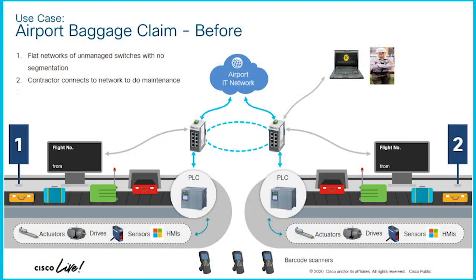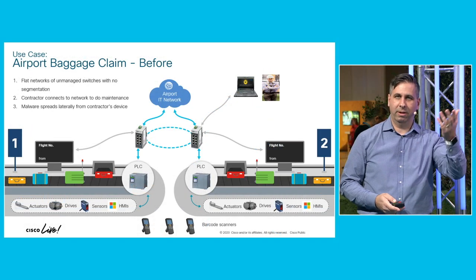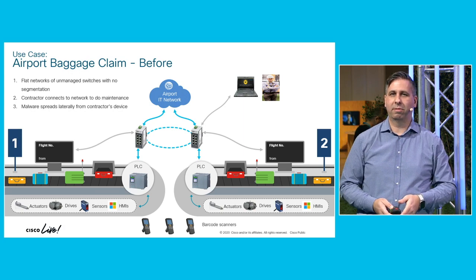Baggage systems are the second most critical function in an airport, second only to air traffic control. Even if these systems are completely air-gapped, technicians commonly come in to do maintenance, diagnostics, and firmware upgrades and connect their own laptops. If that laptop has malware, it will spread laterally end to end with nothing to stop it. This is exactly what happened in the Stuxnet use case, and it happens very regularly.